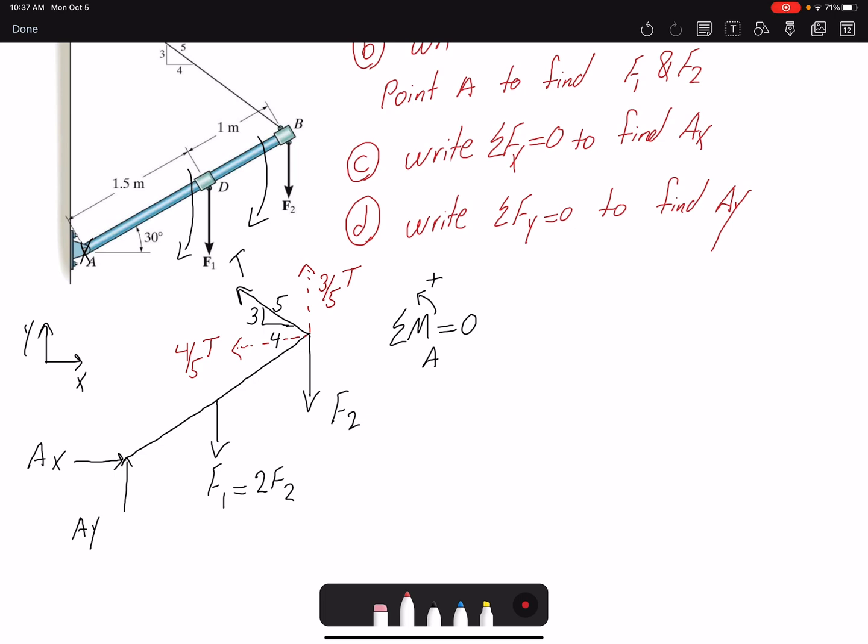The moment arm for the vertical component would be 2.5 cosine 30. This angle is 30 degrees, so 2.5 cosine 30. And the moment arm for the horizontal component would be 2.5 sine 30.